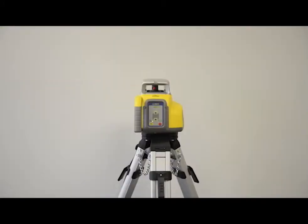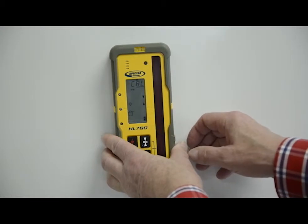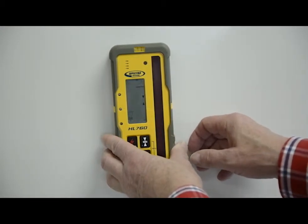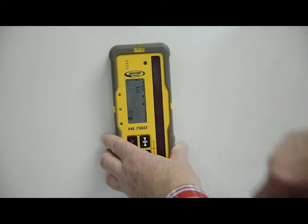The laser is now pointing in the direction of the plus Y axis. Using an HL receiver, press the dead band and power buttons simultaneously to turn it on in calibration mode, 1/64th inch, 0.01 millimeters.